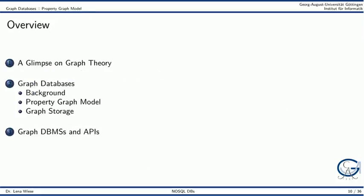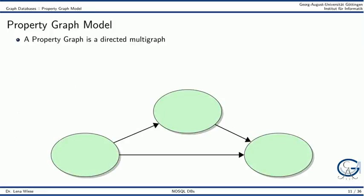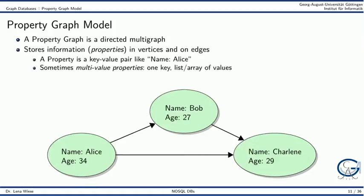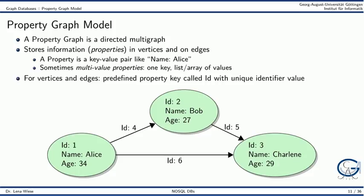We will now introduce the property graph model, which is often used in graph databases. A property graph is a directed multigraph. Some graph databases support multi-value properties — that is, we still have one string as a key, but the value part of the property can be a list or an array of values. A predefined key called ID is usually used to uniquely identify vertices and edges.